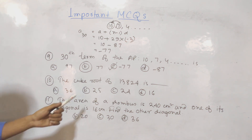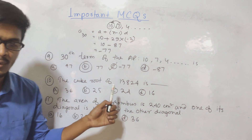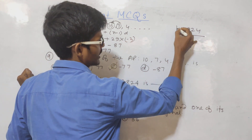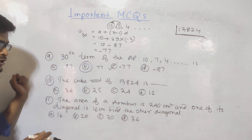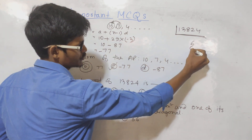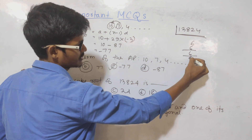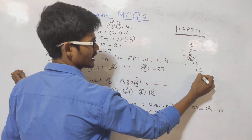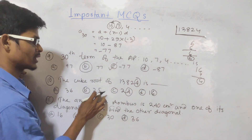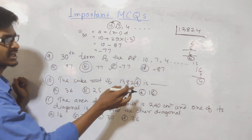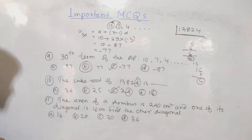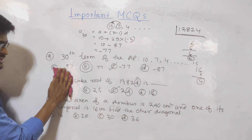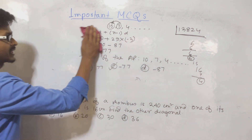Question number 10: find the cube root of 13824 using the prime factorization method. After prime factorization and grouping into triplets, the answer is 24. The answer is option C.